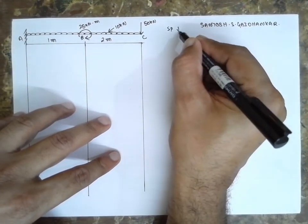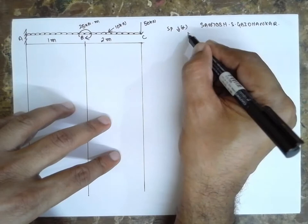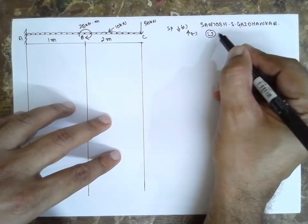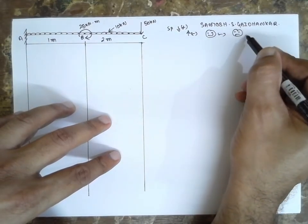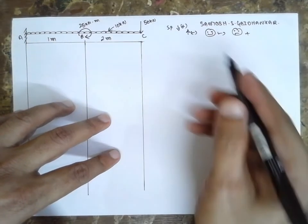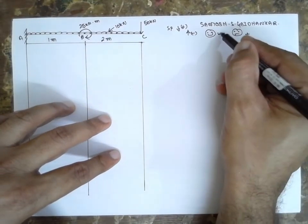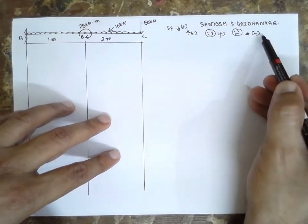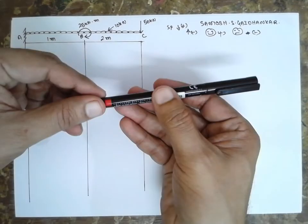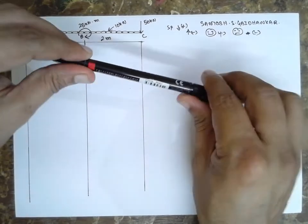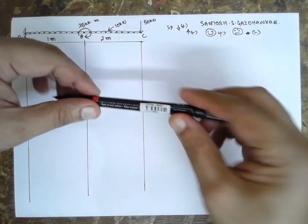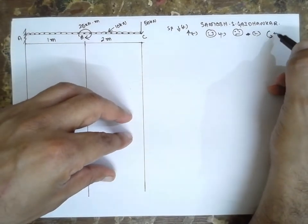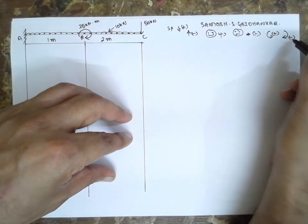For shear force, downward I will consider as positive and upward negative. For bending moment, sad face negative and smiling face positive. For sagging, this is positive and this will be negative. Smiling face will be positive and sad face will be negative. That means for hogging I will consider as negative, for sagging I will consider as positive. And for couple, anticlockwise is positive and clockwise I will consider as negative.